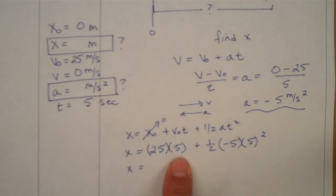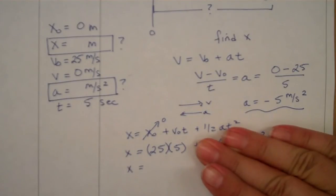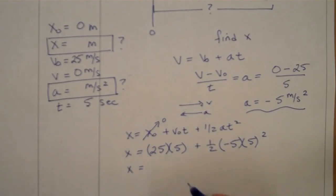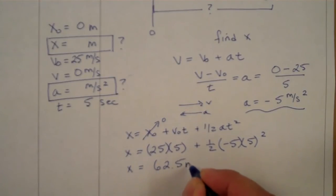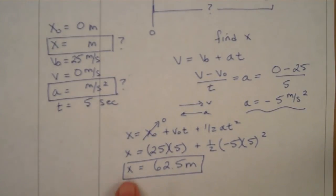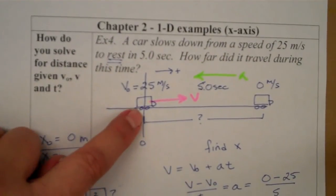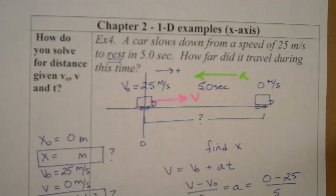So 25 times 5 gives us 125 — that's how far we would go if we didn't slow down. But because we're slowing down, we subtract the deceleration term. Our final answer is 62.5 meters. We have our units and a position value telling us how far from the origin we are after five seconds. Because it's a positive number, we know we're 62.5 meters in the positive direction from our origin. That concludes this example.